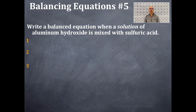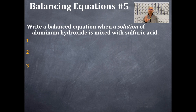Let's do number five. Write a balanced chemical equation when a solution of aluminum hydroxide is mixed with sulfuric acid. When it gives you the keyword 'solution,' you're going to ignore your solubility rules and just write down what's stated in the problem.